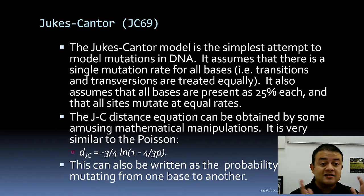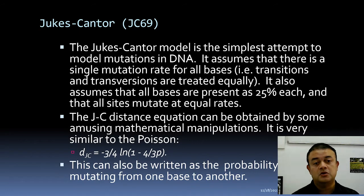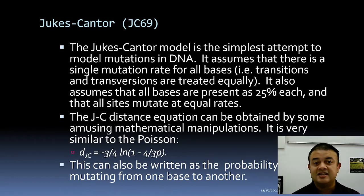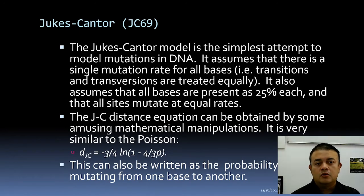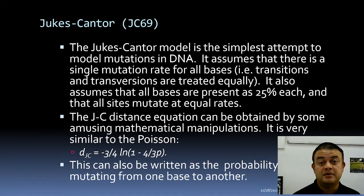JC69 assumes a single mutation rate for all bases — transitions and transversions are treated equally. We know that's not always the case, but sometimes a dataset might support it. You cannot dismiss JC69 as wrong; if a simple model can explain the data, why use a complicated one? This is the Occam's razor concept.